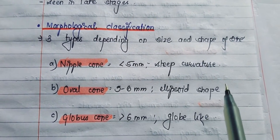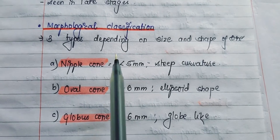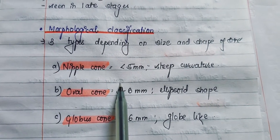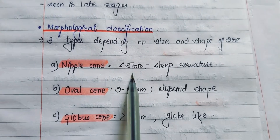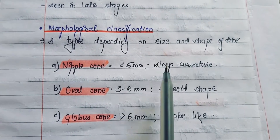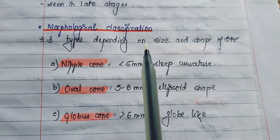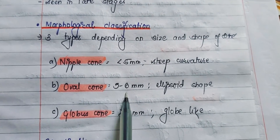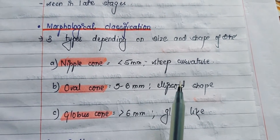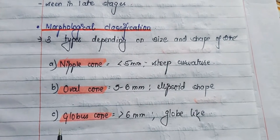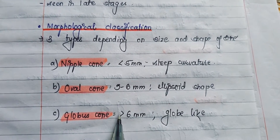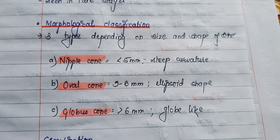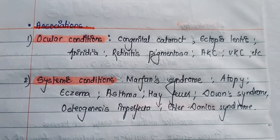Keratoconus is of three types on the basis of the size and shape of the cone. The nipple cone has a size of less than 5 mm and has a steep curvature. The oval cone is 5–6 mm and ellipsoid in shape. The globus cone is the largest, with a size of more than 6 mm and a globe-like shape.